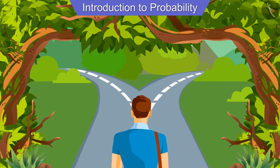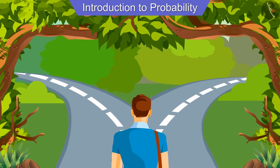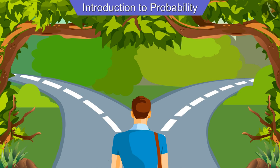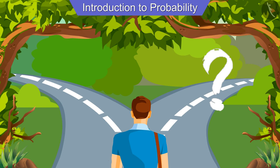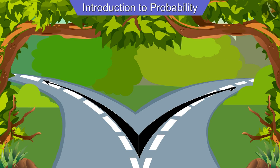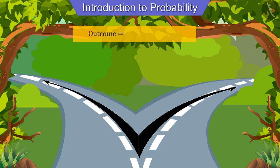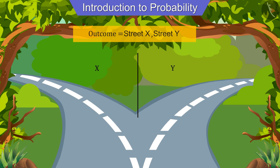Joseph is going to his friend Vaibhav's house. The road on which he is walking further gets divided into two roads. Joseph starts looking for a signboard in order to find the right direction. Joseph's walk on the road is a trial. Both the roads in front of Joseph are outcomes for this event. Let's represent the road on the left as X and the road on the right as Y.